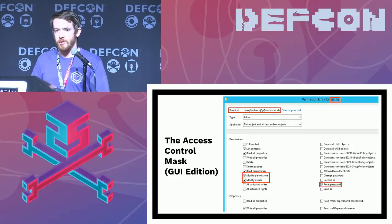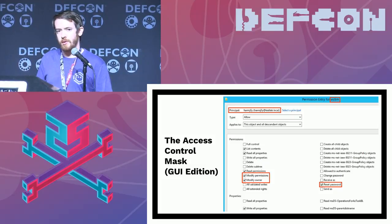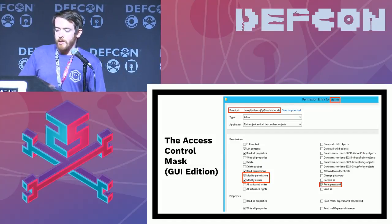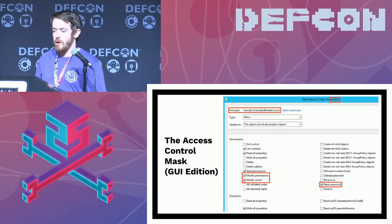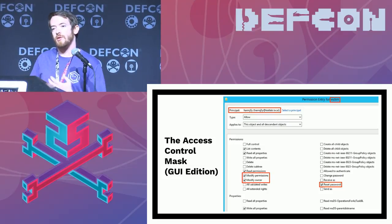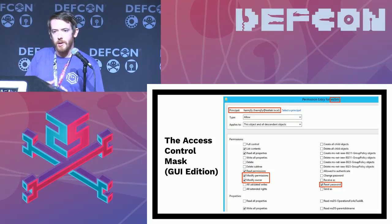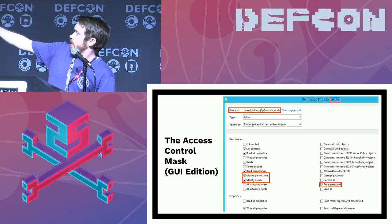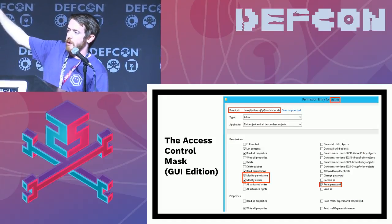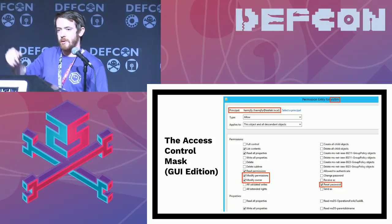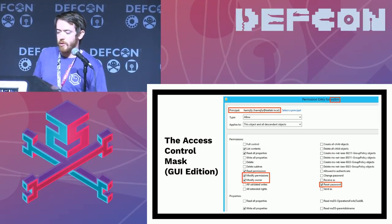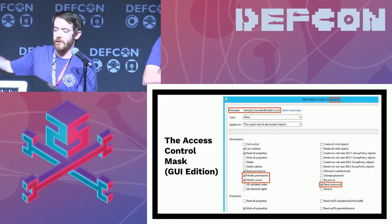In an access control entry, there are 32-bit fields that control some auditing components. What we really care about are: the principal that has rights over the object for that particular entry, and the access mask — a 32-bit field that defines what those rights are. In ADUC (Active Directory Users and Computers) you can see that the object is 'victim,' the principal is harmj0y, and harmj0y has rights such as modifying permissions on the object and modifying the owner.